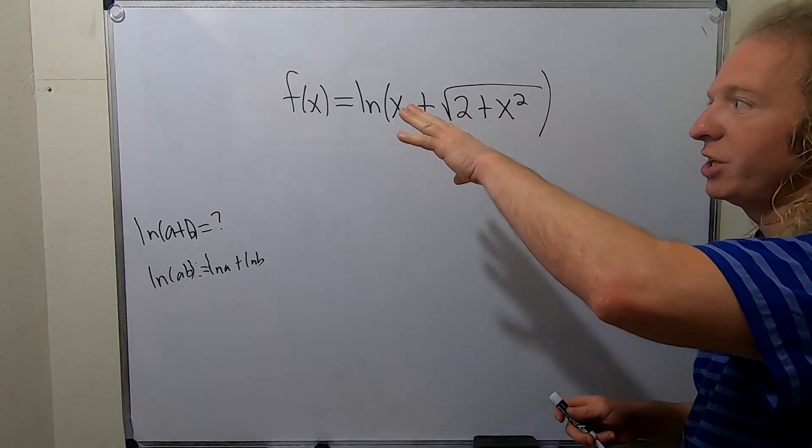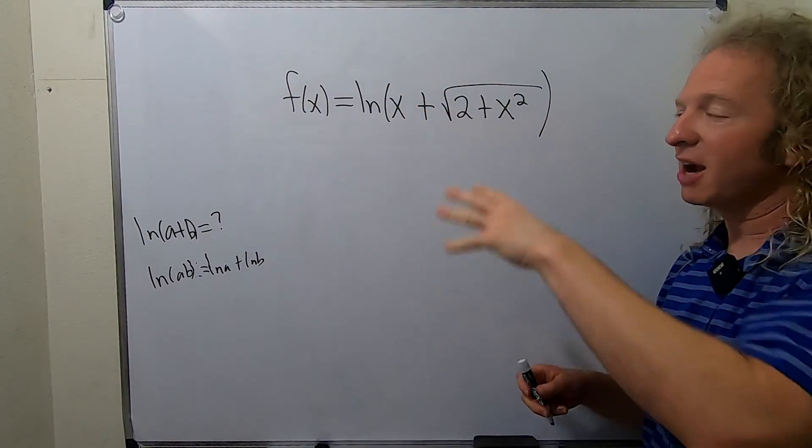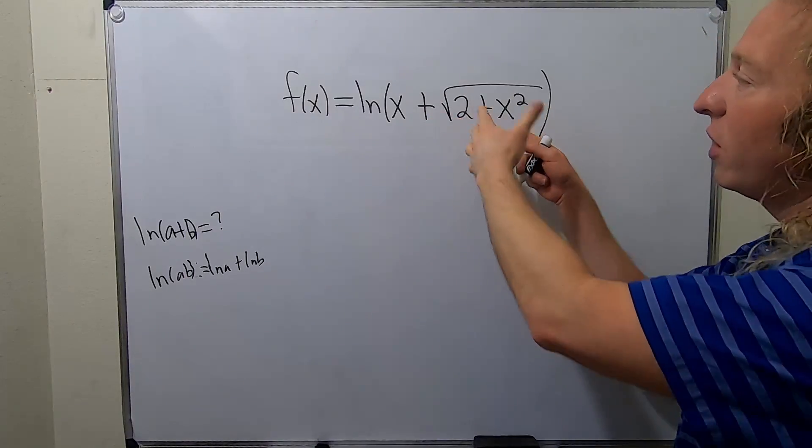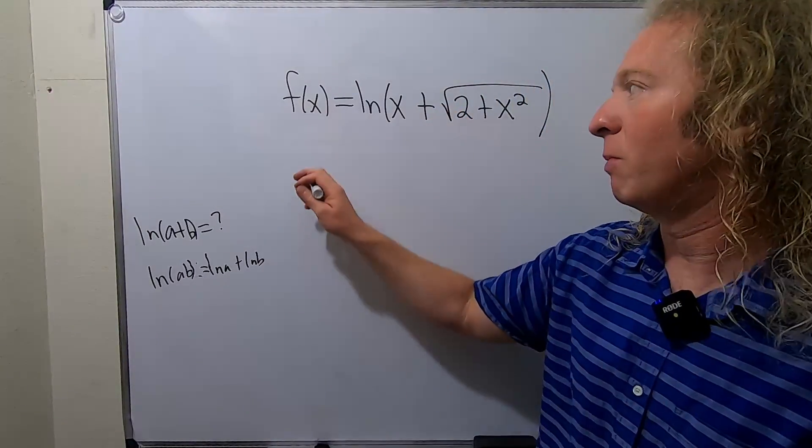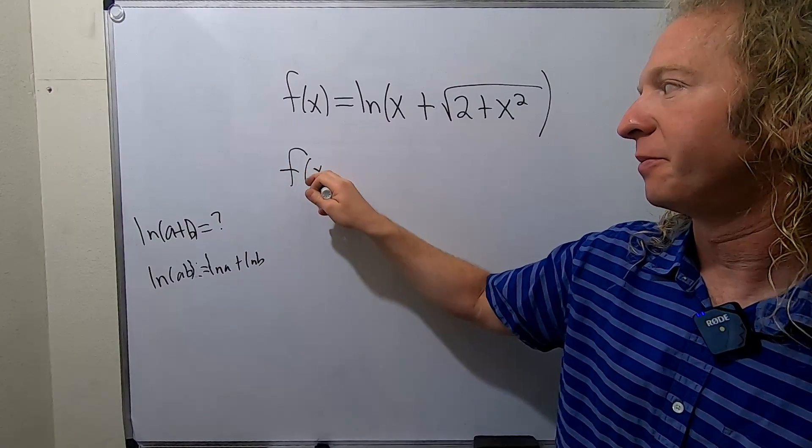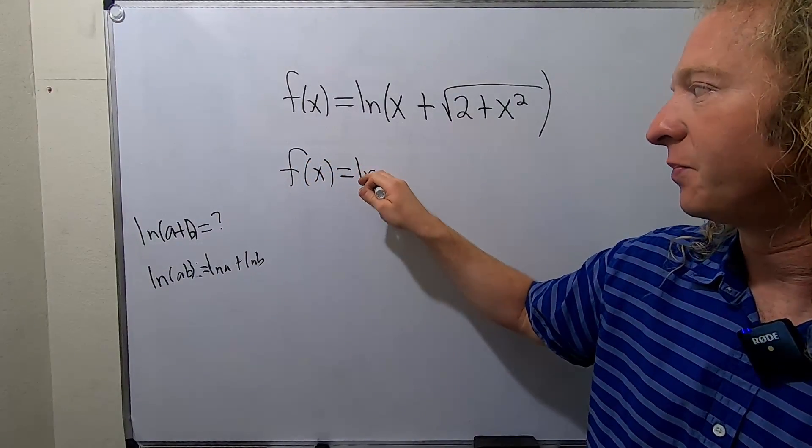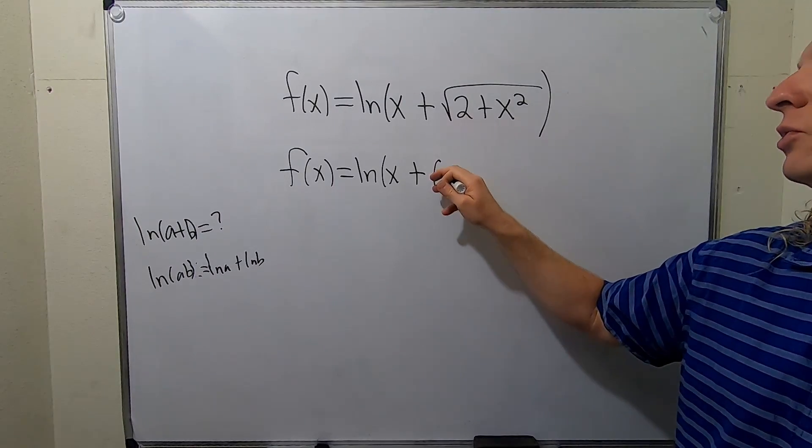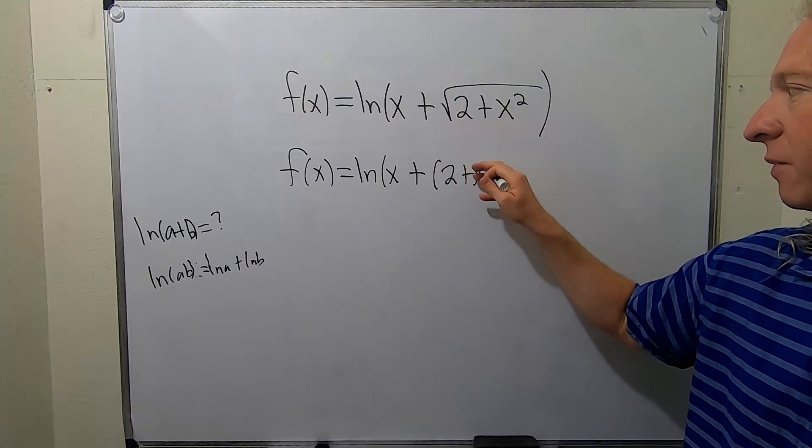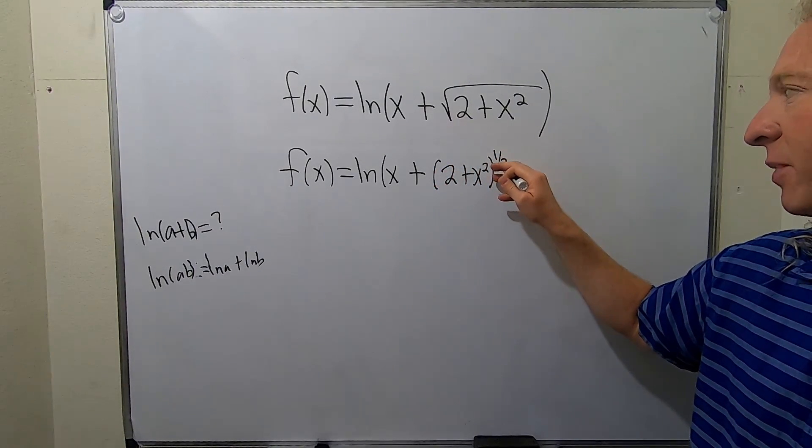So if we're just going to differentiate this, knowing that we have to differentiate the inside, let's go ahead and rewrite that square root as a 1 half power because that will make it easier when we do differentiate. So this will be x plus (2 plus x squared) to the 1 half, and then we have the parentheses.